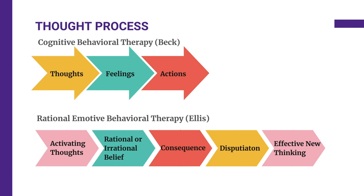In contrast, Rational Emotive Behavioral Therapy, or REBT, developed by Albert Ellis, focuses on identifying and disputing irrational beliefs that contribute to emotional distress. This therapeutic approach underscores the profound influence of irrational thoughts on emotions and behaviors. Using the ABC model — A for activating event, B for beliefs, C for consequences — REBT examines the interplay between events, beliefs, and reactions. Applicable to a wide range of emotional and behavioral issues, REBT aims to cultivate rational thinking and adaptive behaviors. The overarching objective is to help individuals develop resilience and psychological well-being by changing irrational beliefs and responses to life's challenges.